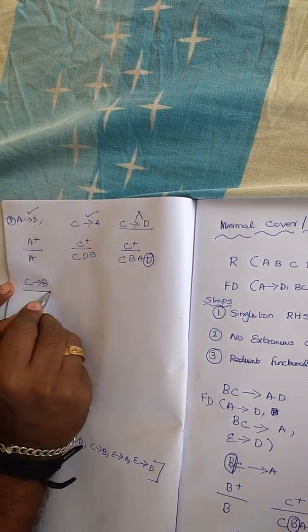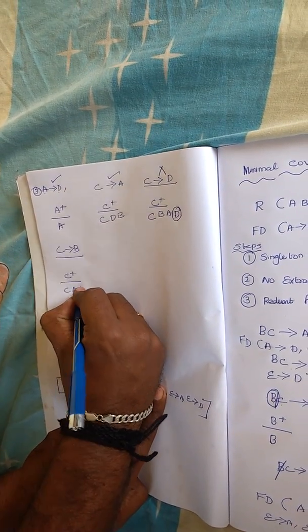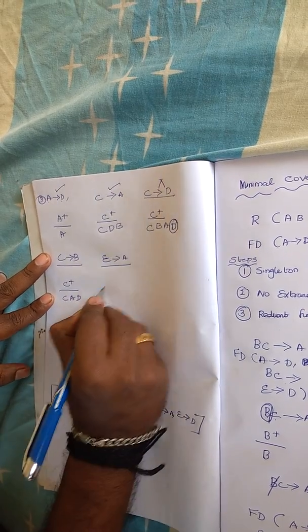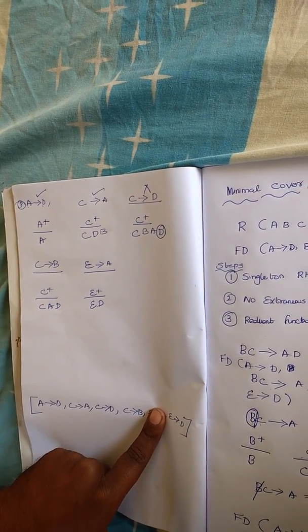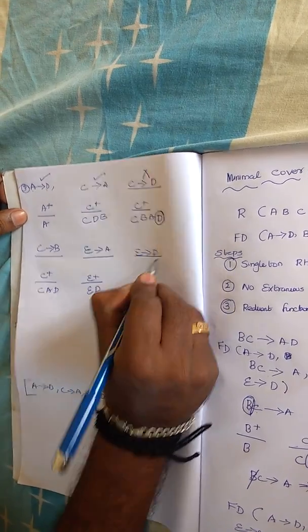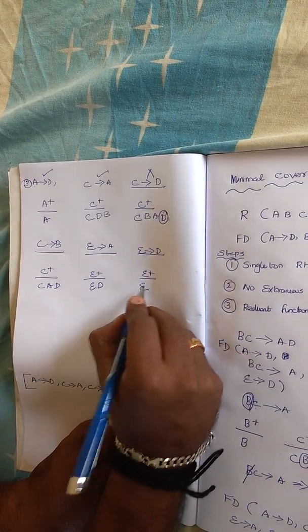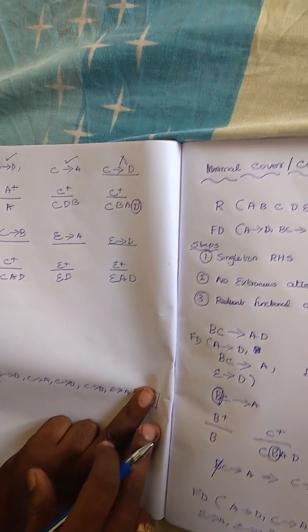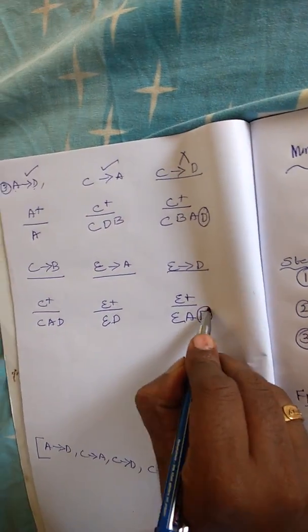For C determines B: excluding this FD, C closure gives C, then C determines A, then A determines D. We cannot get B. So C determines B cannot be eliminated. For E determines A: E closure gives E, then E determines D. From D we get nothing else, so we cannot derive A — cannot eliminate. For E determines D: E closure gives E, then E determines A, then A determines D. So without this FD we can still derive D — this is redundant and we eliminate it.